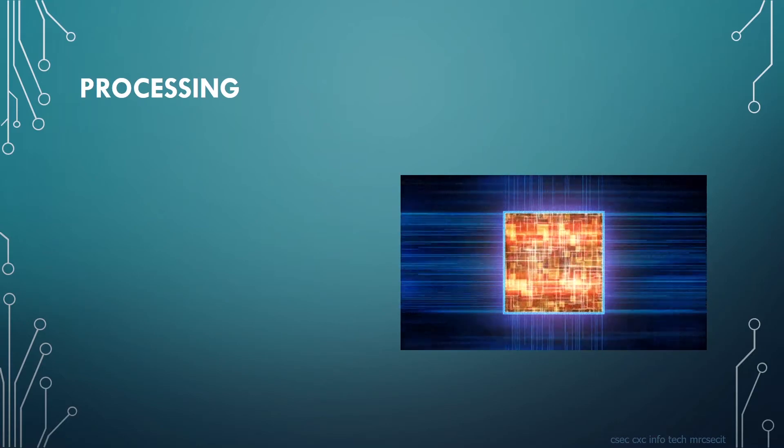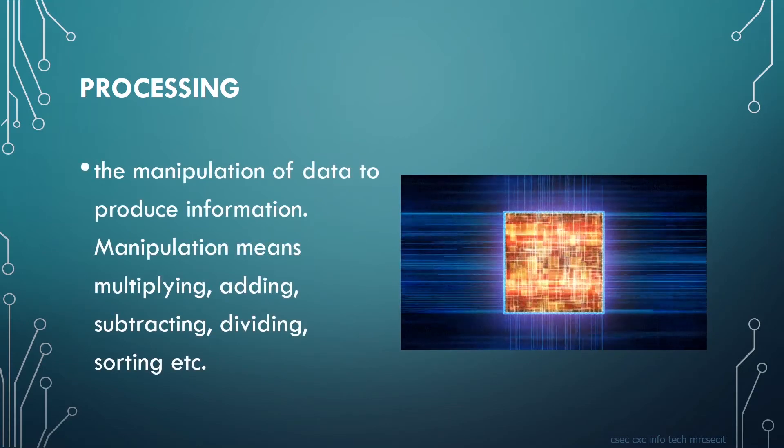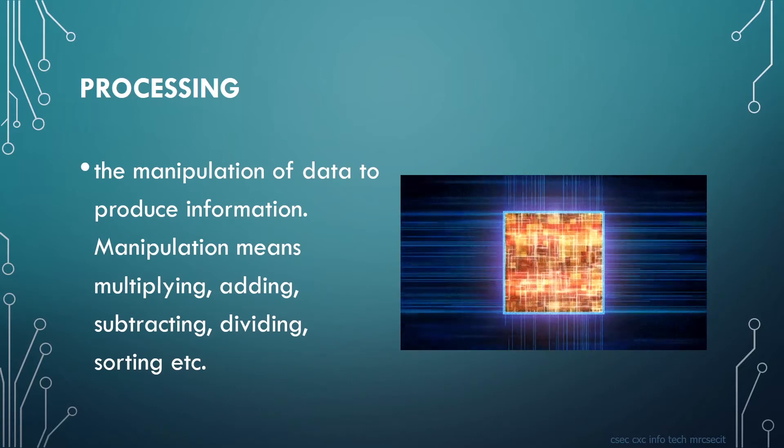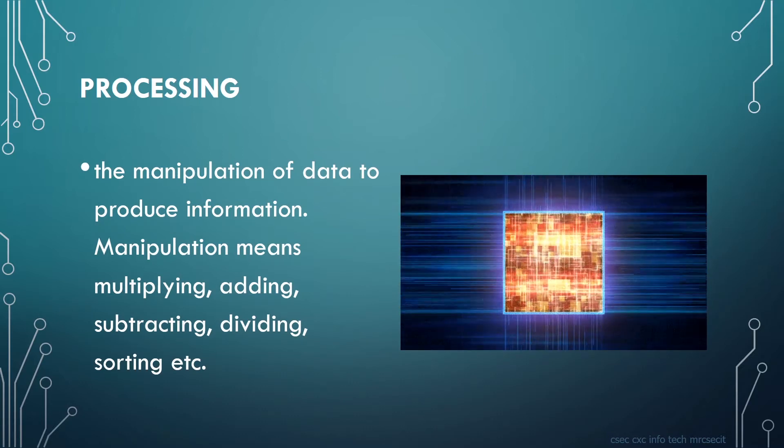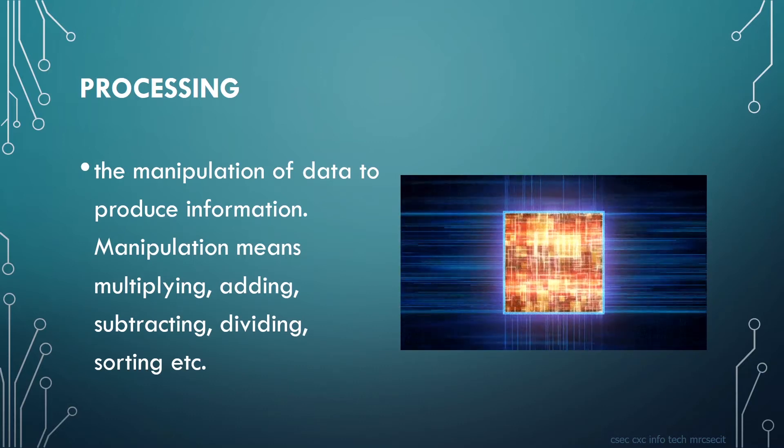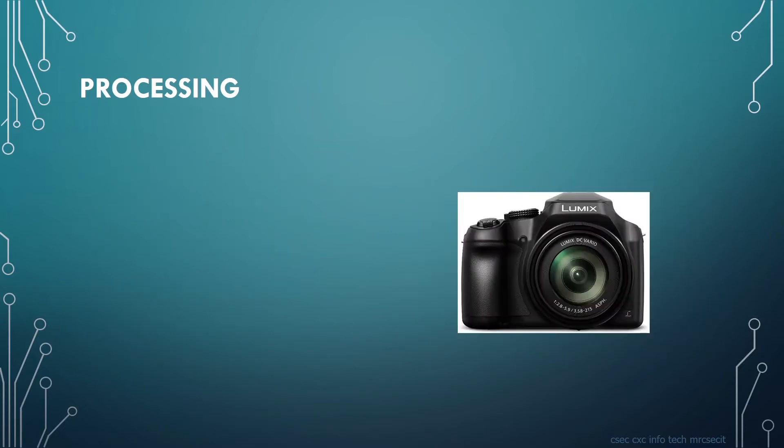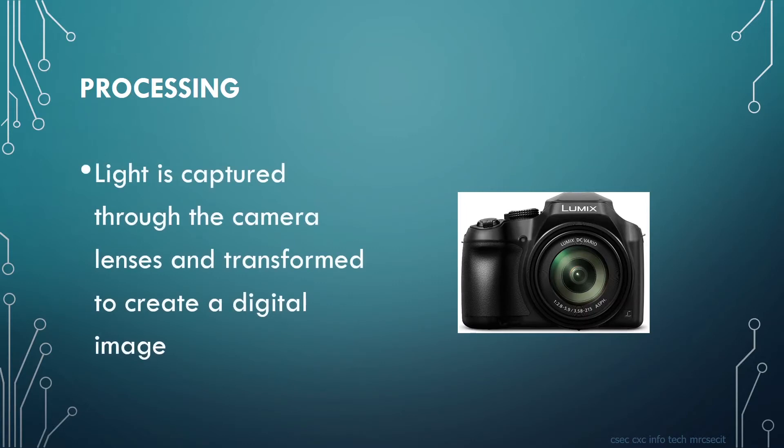Now that we have the data captured, let's look at processing. Processing is the manipulation of data to produce information. Manipulation means multiplying, adding, subtracting, dividing, sorting, etc. Let's take a look at an example of processing using a camera. Light is captured through the camera lens and transformed to create a digital image.